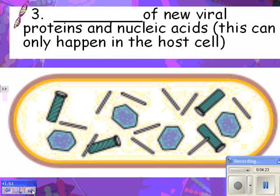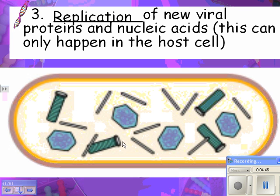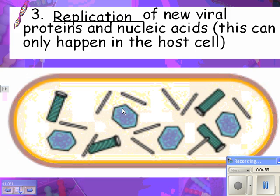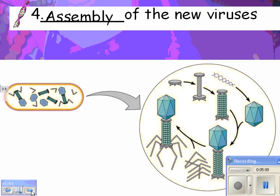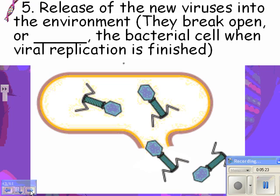After injection, replication happens — replication of new viral proteins and nucleic acids. This can only happen in the host cell because you actually need nucleic acids, amino acids, and some enzymes that are only found in the bacteria, not in the virus. Remember, viruses don't grow — they assemble. The viral DNA is directing the bacterial cell to make a whole bunch more viruses. More viral DNA gets enclosed with protein and then all the pieces get assembled together, like putting Legos together. You're going to make lots and lots of viruses from just one infection.